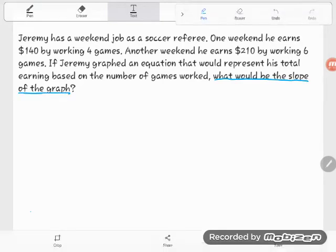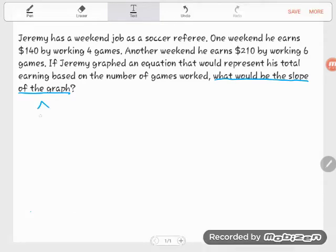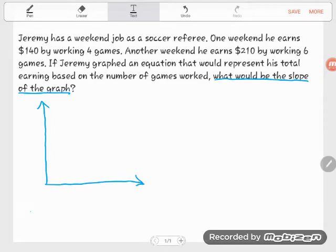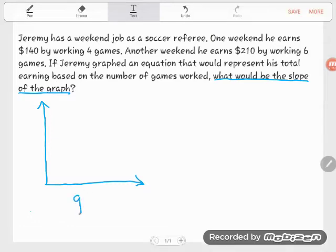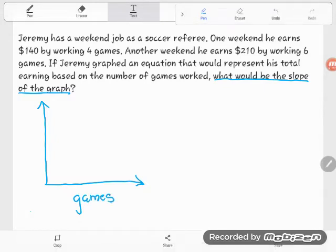If I were to plot these earnings on a graph, let's go ahead and make a graph to get started, and then I'm going to solve this two different ways. What do I have going on here? What is my independent and dependent variable? The money that Jeremy makes depends on how many games he referees, so the games here are the independent variable. That's what Jeremy can manipulate - he can work more or less games.